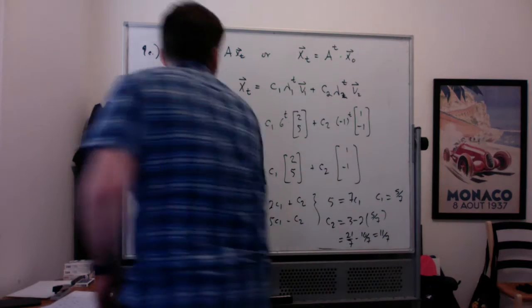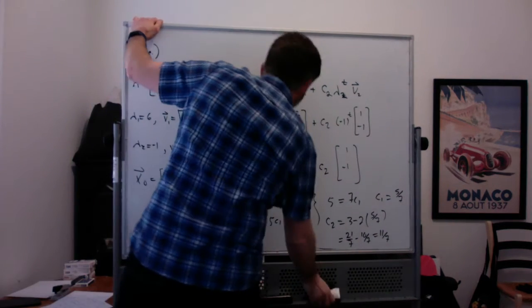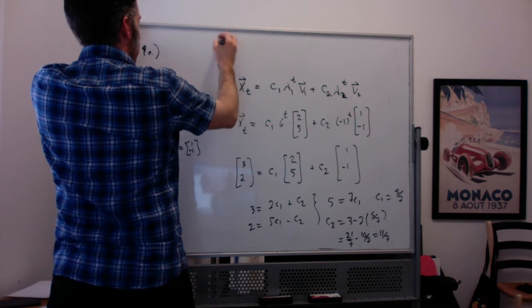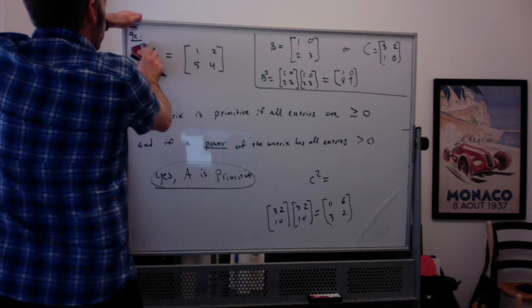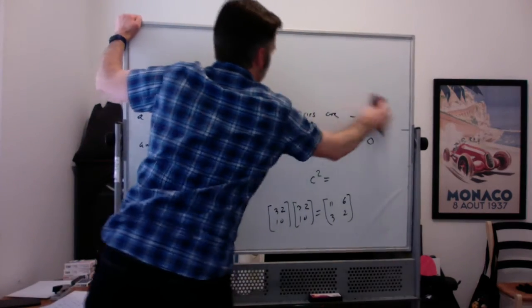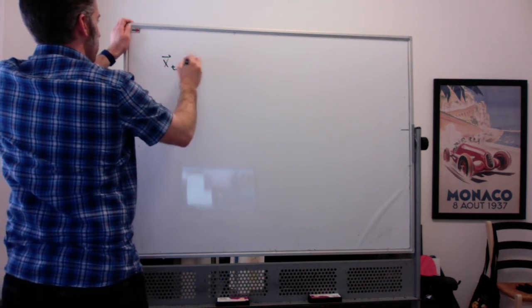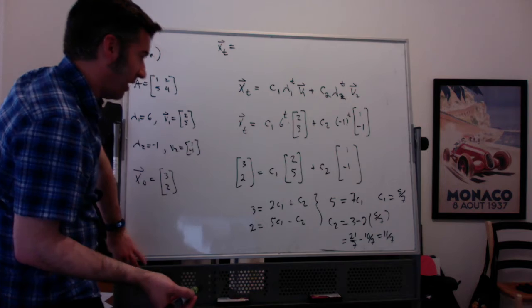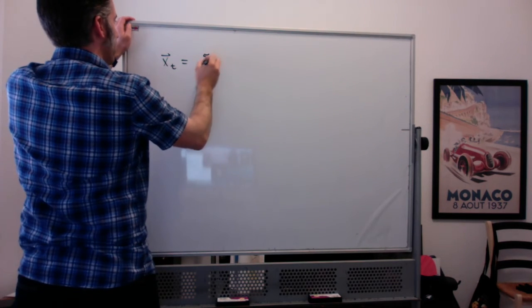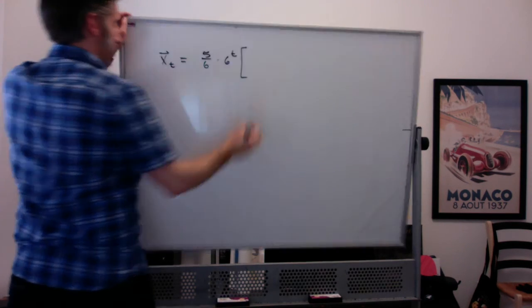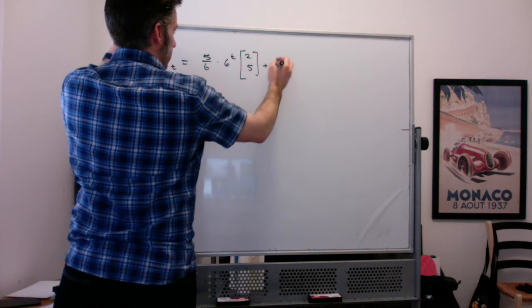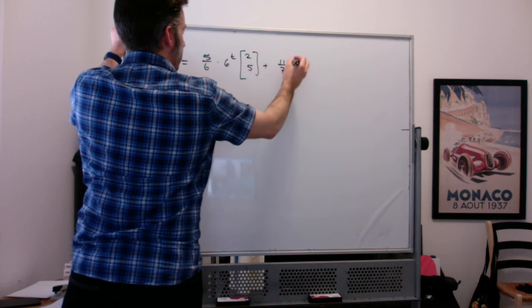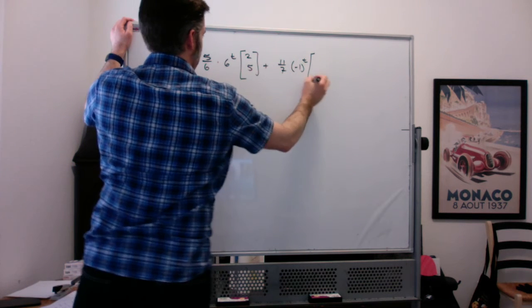So my answer here to this question is that x sub t is equal to, I'll write on this one actually, which I should have erased ahead of time. So we have that x sub t is equal to c1 was 5 sevenths, so 5 sevenths times 6 to the t times the vector 2, 5 plus c2, which I just said was 11 sevenths times negative 1 to the t times 1, negative 1.